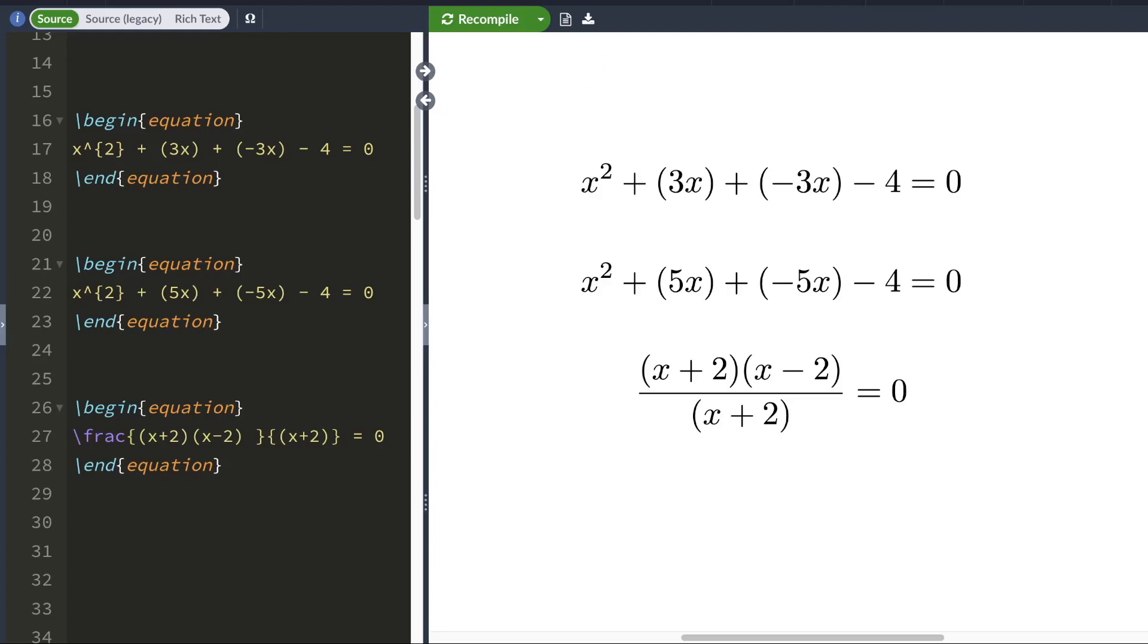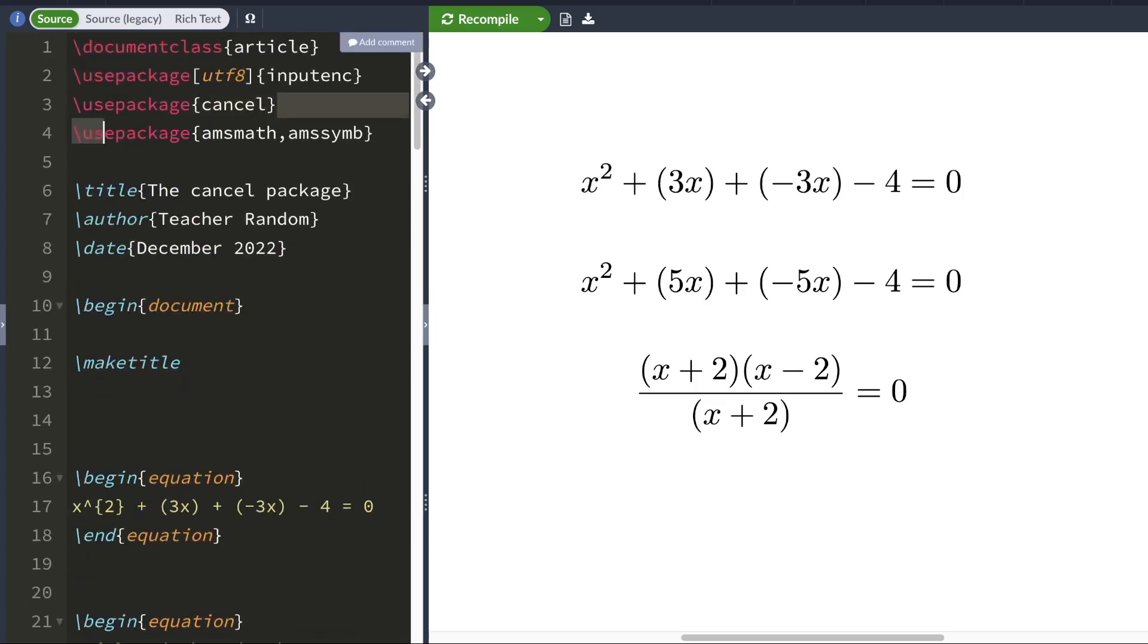In this LaTeX tutorial, I'll show you how you can use the cancel package to cancel out math terms. First, you want to add the cancel package to the preamble of your document. I'll also be using the AMS math and AMS symbol packages for this tutorial.